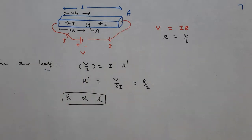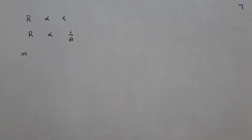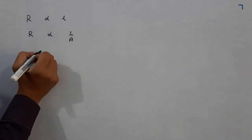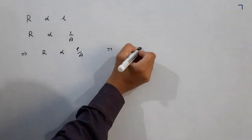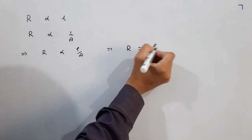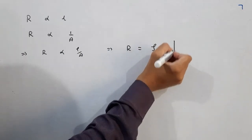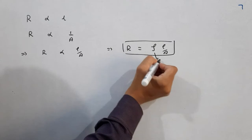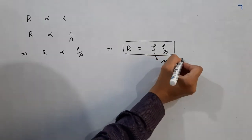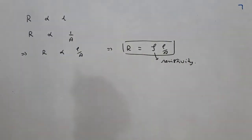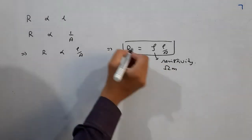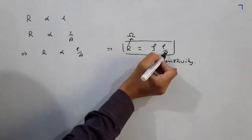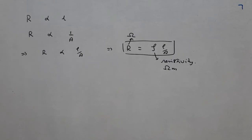Combining these two relations, R is proportional to L/A, which gives R = ρ × L/A, where the constant ρ we denote by rho and call it resistivity. Its SI unit is ohm·meter, since resistance has SI unit ohm, area is meter squared, and length is meter. It is important to note that resistivity does not depend upon the physical dimensions of the conductor — it is independent of length, area of cross section, shape, or size. It is an inherent property of the material.